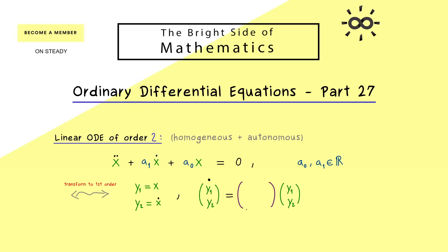The matrix A involved is quite easy to write down. In the first row we have 0 and 1, because the derivative of y1 is simply y2. The second row is given by the original ODE: minus a0 and minus a1 — we just bring those two terms to the right-hand side. The whole result is a two-dimensional system with a real matrix A.